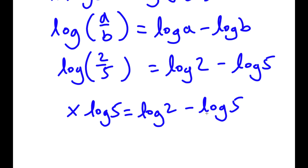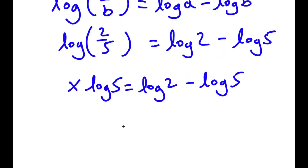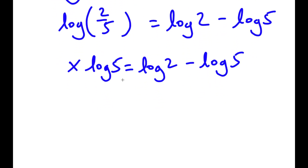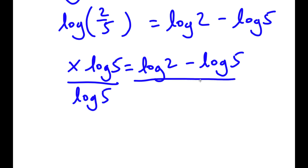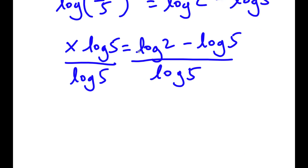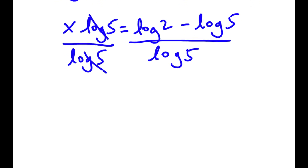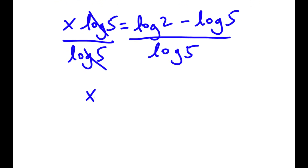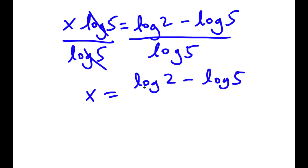So now what I'm going to do is divide by log 5 on both sides. So if I divide by log 5 on both sides, I get x times log 5 over log 5 is equal to log 2 minus log 5 over log 5. These two will cancel out, so now I have x is equal to log 2 minus log 5 over log 5.